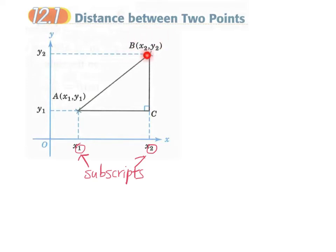Now let's find the distance — the length of line AB. It is quite obvious that triangle ABC is a right-angled triangle. If we can find the length of the horizontal side and the height of the triangle, then we can make use of the Pythagorean theorem to find the length of AB. So let's find BC first.